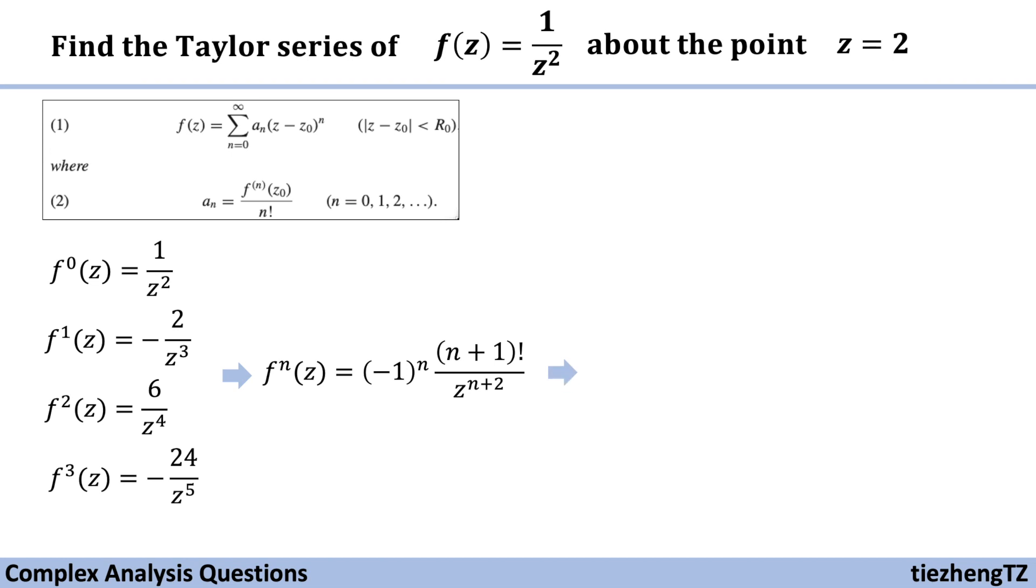So the next step is just to substitute into aₙ and then substitute into f(z). And since z₀ is 2, because we are writing the Taylor series about the point z = 2, so z₀ is 2. So we have everything, just substitute.